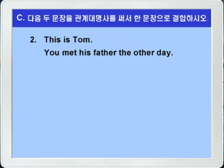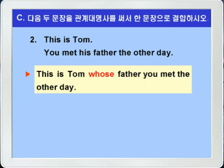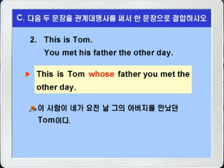2번입니다. This is Tom. You met his father the other day. 이 사람이 탐이다. 너는 요전날 그의 아버지를 만났다. 두 문장에서 공통되는 것을 먼저 찾아야겠죠? Tom과 his father의 his가 공통이죠. Tom이 선행사가 되고 his를 소유격 관계대명사 whose로 연결해서 This is Tom whose father you met the other day. 이 사람이 네가 요전날 그의 아버지를 만났던 Tom이다.